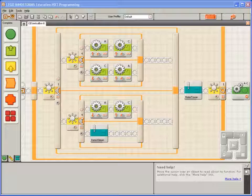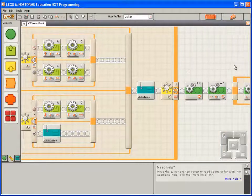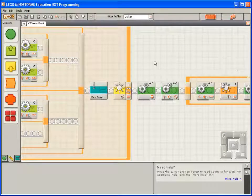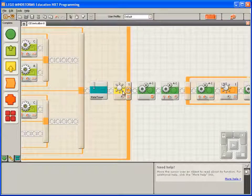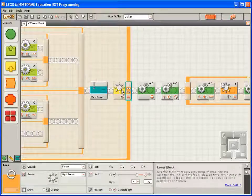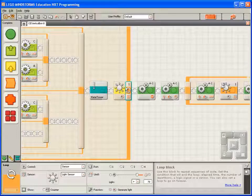Here's the line following and can finding program that we've been using to date. There's a loop block to the left which contains our main line following code. There's an exit condition set on the loop block, so it exits when the light sensor, in my case sensor 1, sees a value greater than 78. That means the robot is over the silver at the start of the chemical spill.